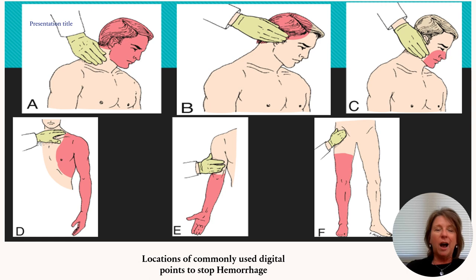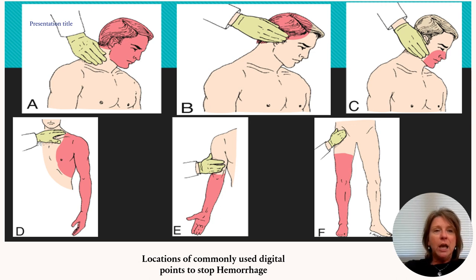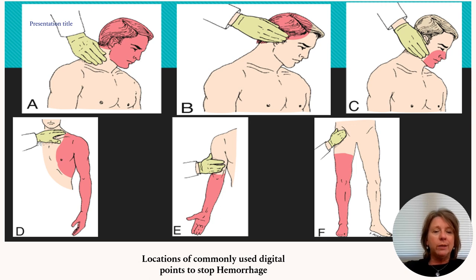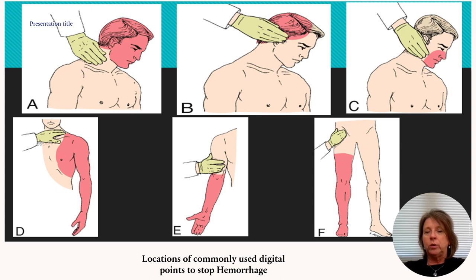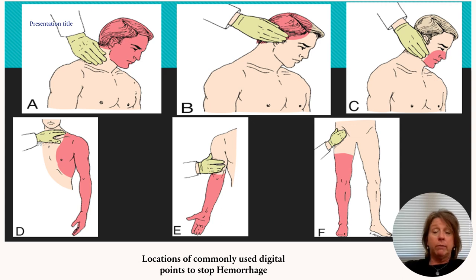Here is a useful visual showing commonly used digital pressure points to stop hemorrhage. The pink areas indicate where to apply pressure to stop blood flow distally. For example, occluding above the arm stops hemorrhage to that limb; occluding the femoral stops flow below. This is practical knowledge for anyone, not just in clinical settings.